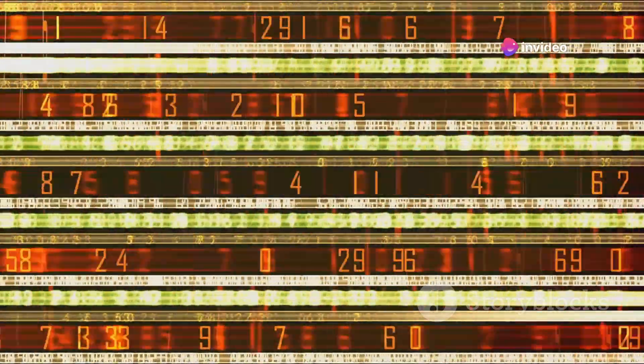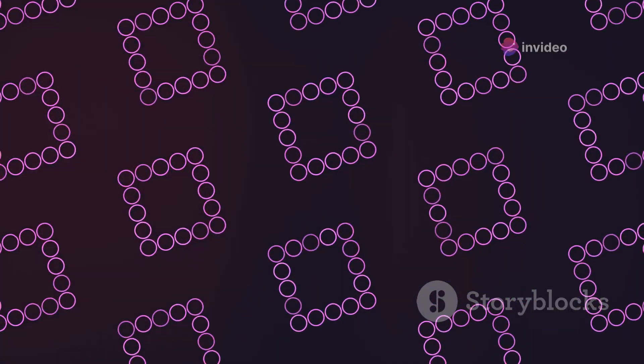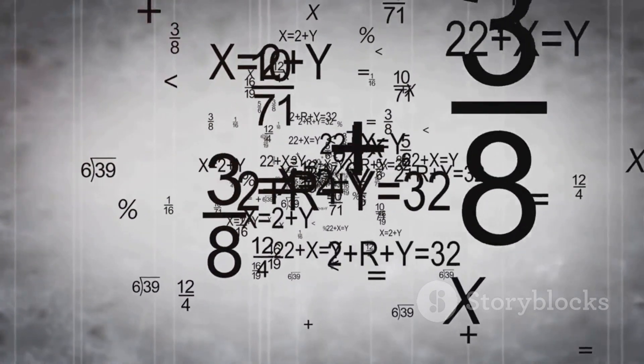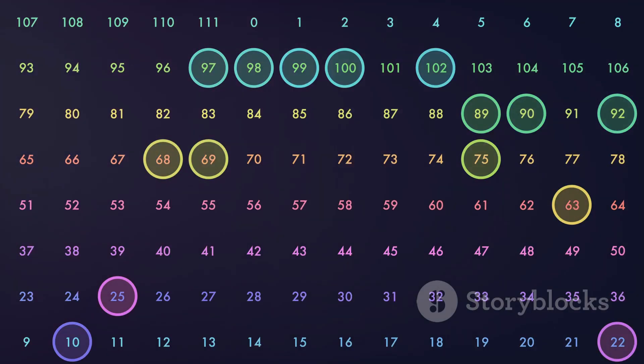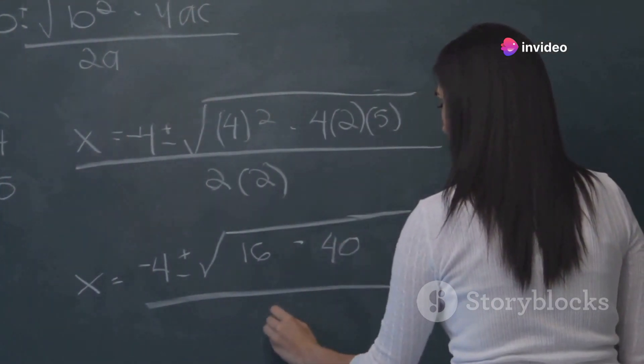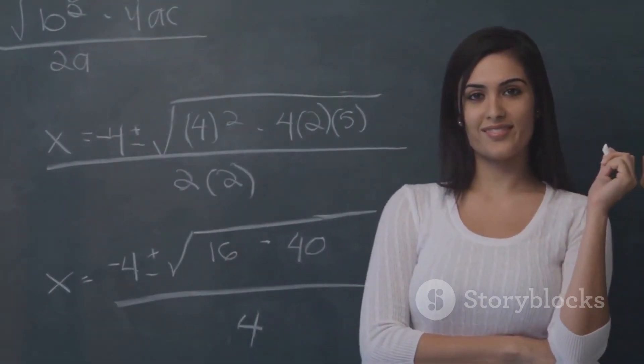Furthermore, 37 exhibits intriguing patterns when multiplied. For instance, 37 times 3 is 111, 37 times 6 is 222, and so on. These patterns highlight the elegance and order inherent in mathematics, even when it comes to seemingly ordinary numbers like 37.